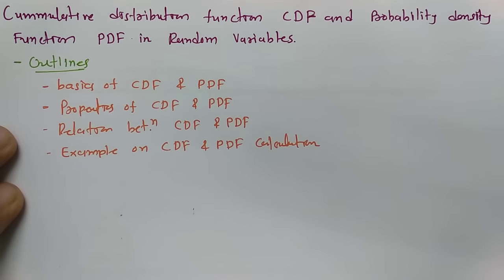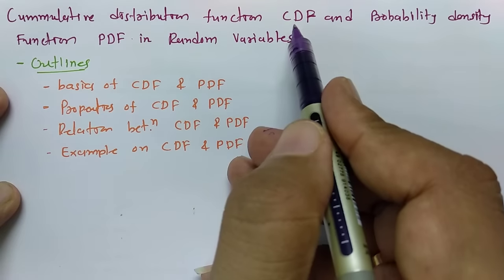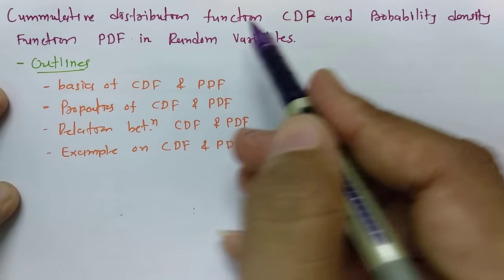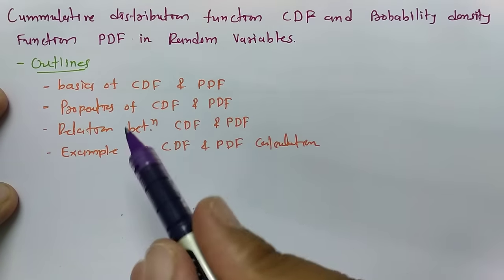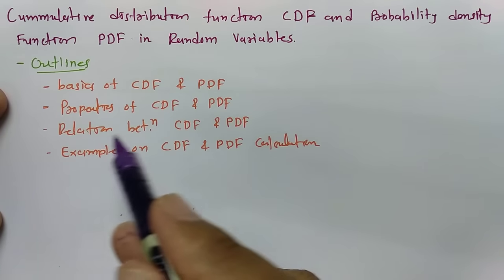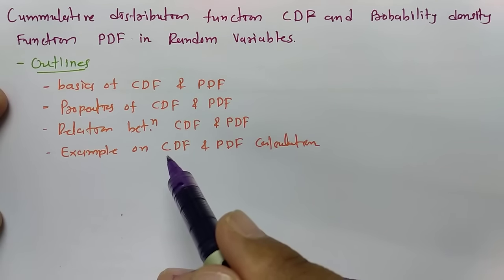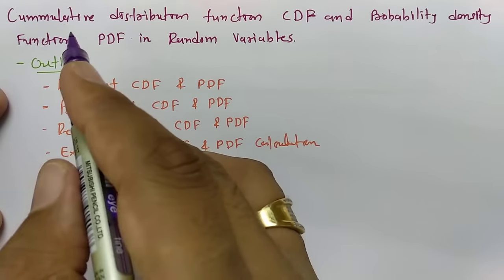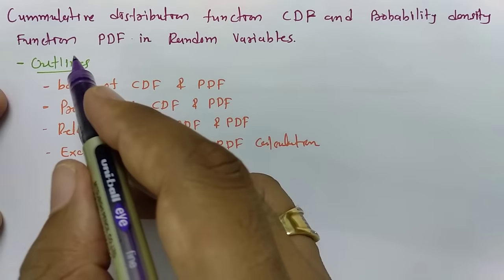Welcome to the digital communication playlist. In this session, I'll be explaining CDF (cumulative distribution function) and PDF (probability density function) in random variables. The session outlines include basics, properties, relations, and examples of CDF and PDF. CDF is cumulative distribution function and PDF is probability density function.